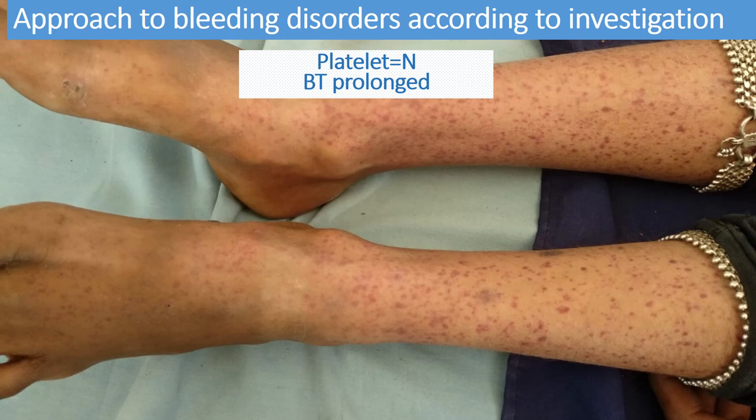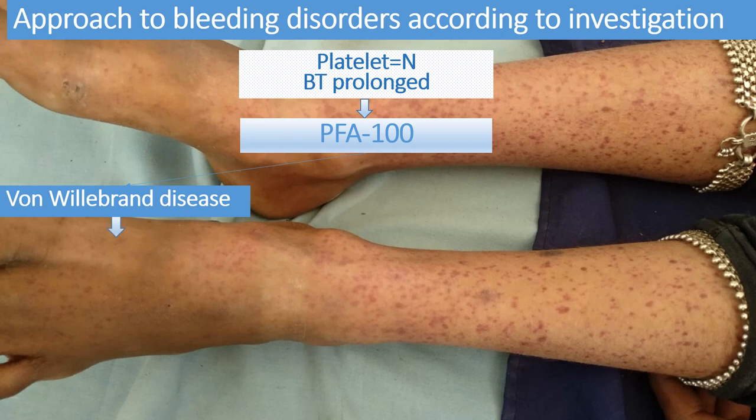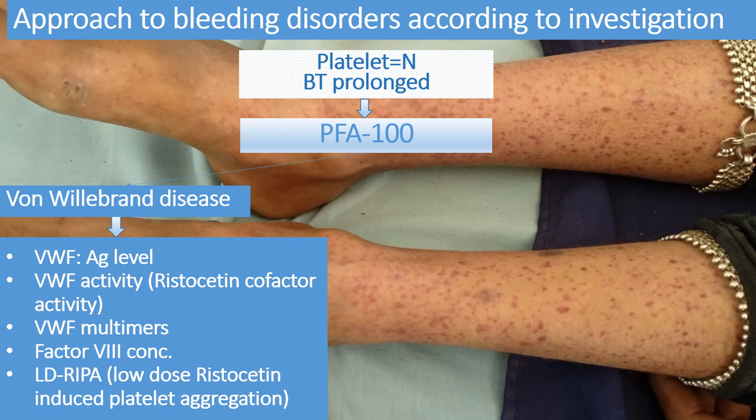If platelet concentration is normal and bleeding time is prolonged, perform PFA-100 to evaluate whether the patient has von Willebrand disease or platelet function disorder. If BT or APTT is prolonged and PFA is altered, and VWD is suspected, perform von Willebrand factor antigen level, von Willebrand factor activity (ristocetin cofactor activity), von Willebrand factor multimers, factor 8 concentration, and low-dose ristocetin-induced platelet aggregation (LD-RIPA).